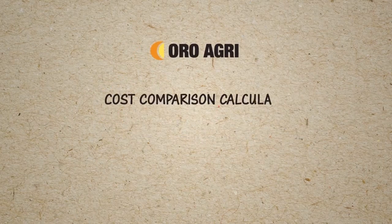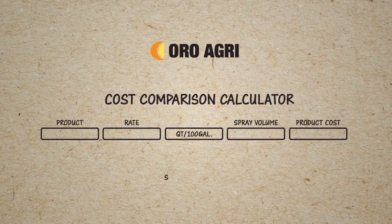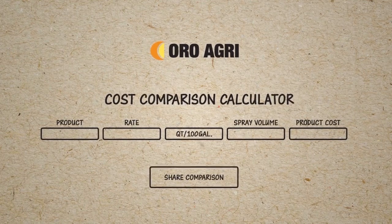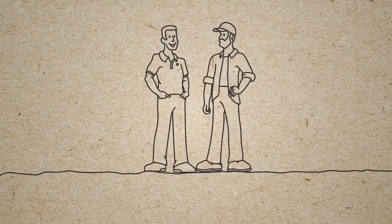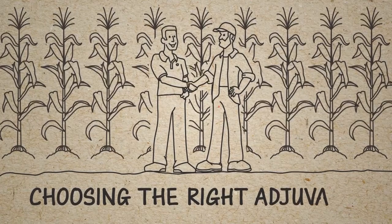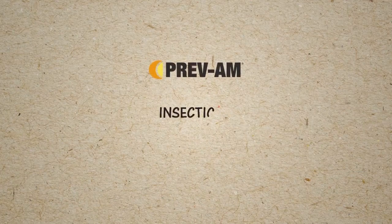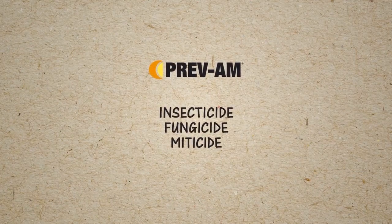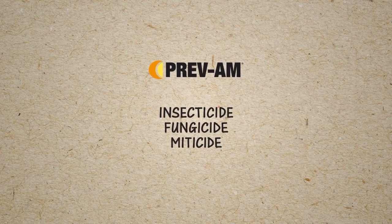For help in calculating your adjuvant's cost per acre, download the OroAgri app for the cost calculator. Whether you require spreading and wetting or penetration action on your crops, your OroAgri representative can help you determine if WetSit, Vintree, OroHSMOC, or OroBoost is right for your operation. In addition, PrevAm, a broad spectrum pesticide, also provides superior spreading and penetration and is increasingly being used in place of adjuvants.